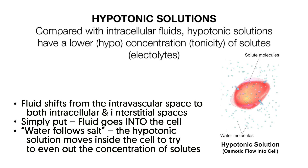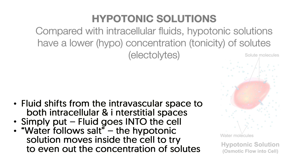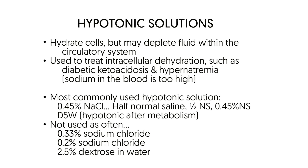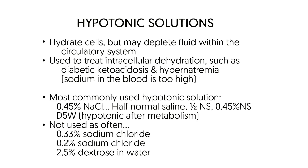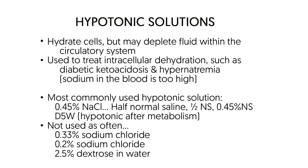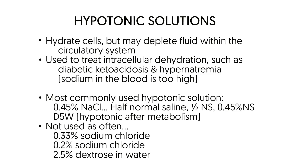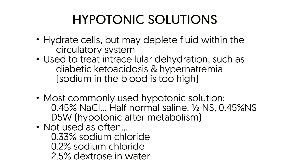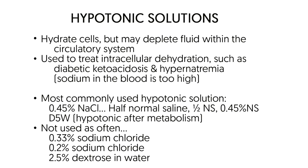Our next category of IV solutions are hypotonic solutions. Compared with intracellular fluids, hypotonic solutions have a lower concentration of solutes. Fluid shifts from the intravascular space to both intracellular and interstitial spaces — simply put, fluid goes into the cell. Since water follows salt, the hypotonic solution moves inside the cell to try to even out the concentration of solutes. Hypotonic solutions are used to treat intracellular dehydration, such as diabetic ketoacidosis and hypernatremia, which is when sodium in the blood is too high. The most commonly used hypotonic solution is 0.45% sodium chloride, usually called half normal saline, written as 1/2 NS or 0.45% NS.